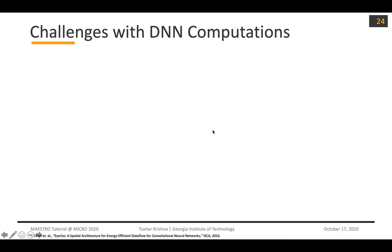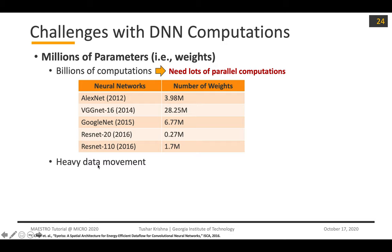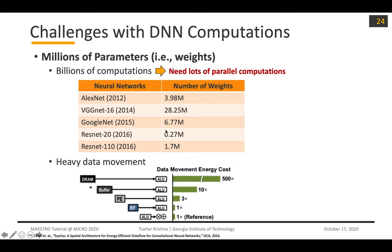One of the key challenges with DNN computations is that there are millions of parameters of weights in neural networks today. Modern networks have millions of weights, which lead to billions of computations. At a very fundamental level, you need a lot of parallel computations in order to run this, a lot of parallel compute in your hardware. There is heavy data movement because not all of these weights can fit on chip. The cost of moving data becomes progressively more expensive as you go off chip.